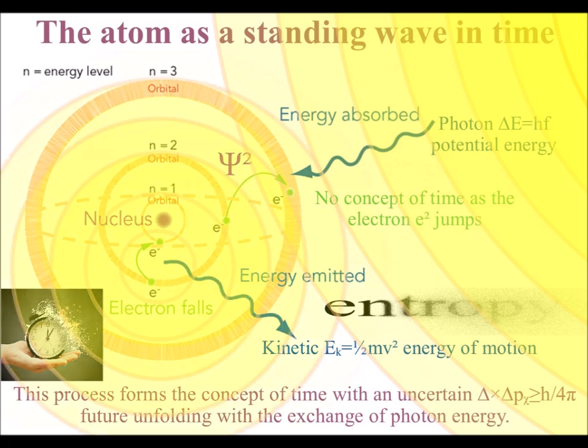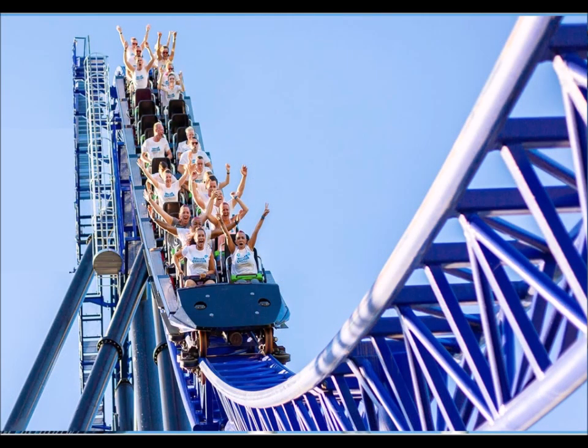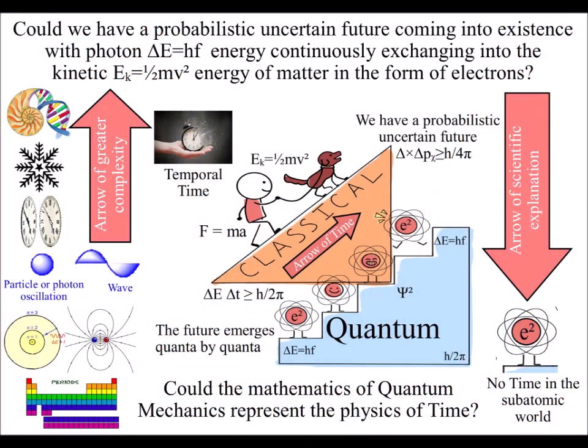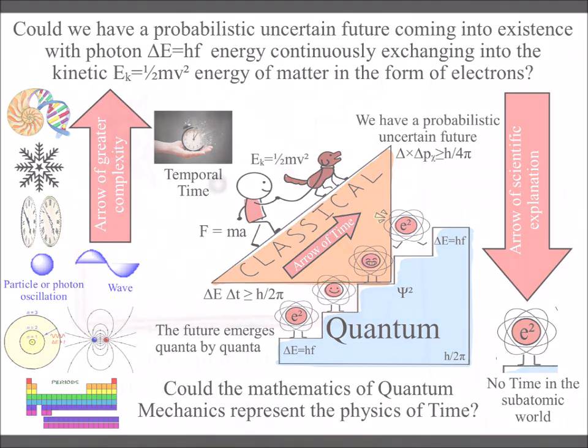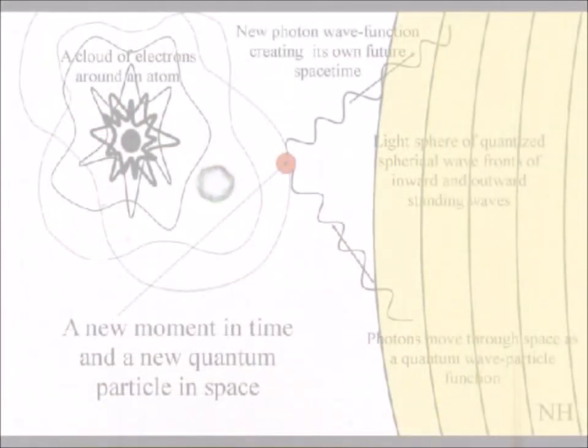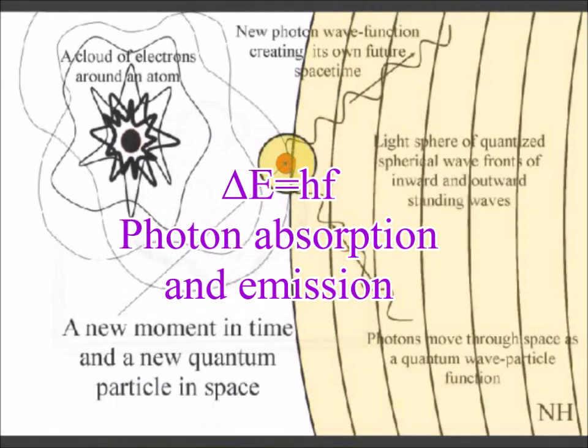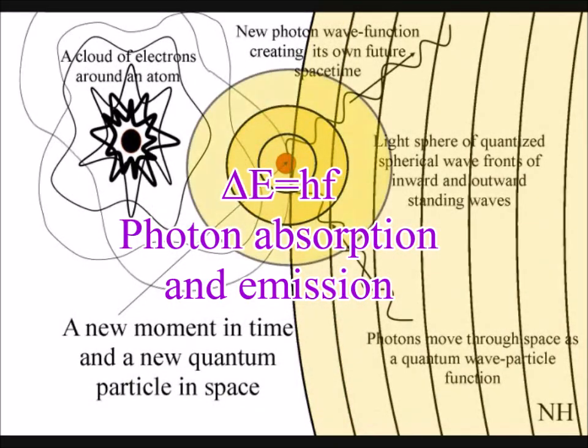Kinetic energy is the energy of motion of what is actually happening. This forms an irreversible probabilistic process with an uncertain future coming into existence photon by photon with the absorption and emission of light waves.